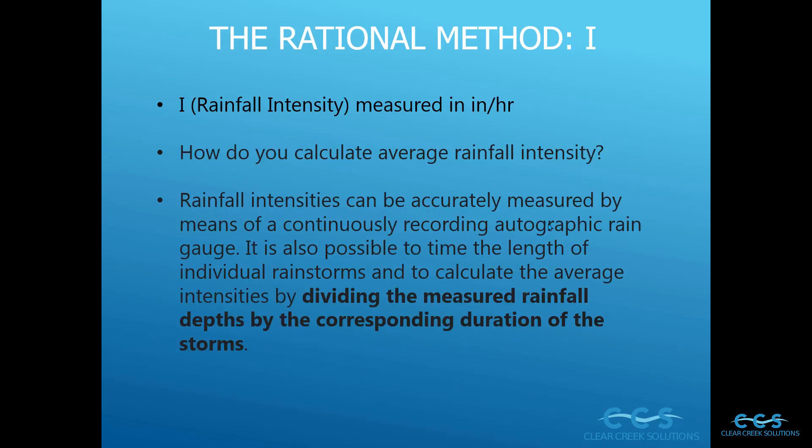Rainfall intensity I is measured in inches per hour, and most importantly we want to determine how you can calculate that average rainfall intensity — where does this number come from? Rainfall intensities can be accurately measured by means of a continuously recorded autographic rain gauge. It's also possible to time the length of individual rainstorms and calculate the average intensities by dividing the measured rainfall depths by the corresponding duration of the storm. There are actually a lot of different ways you can measure rainfall intensity, depending on the time interval you're using and the amount of rainfall you're collecting.